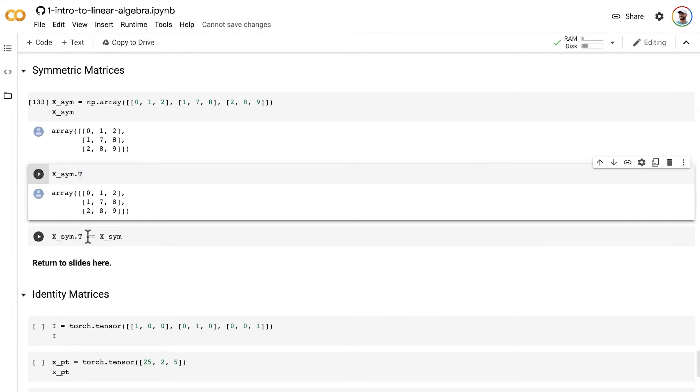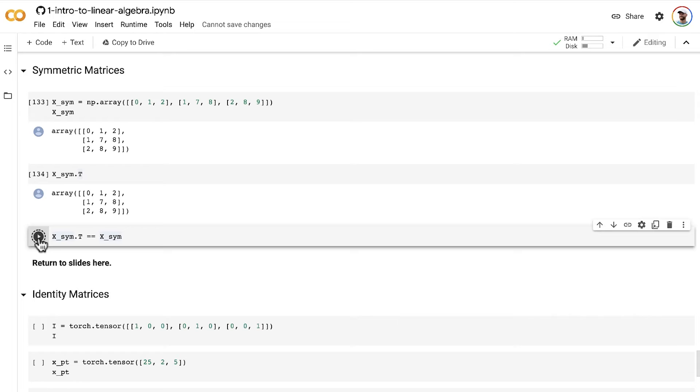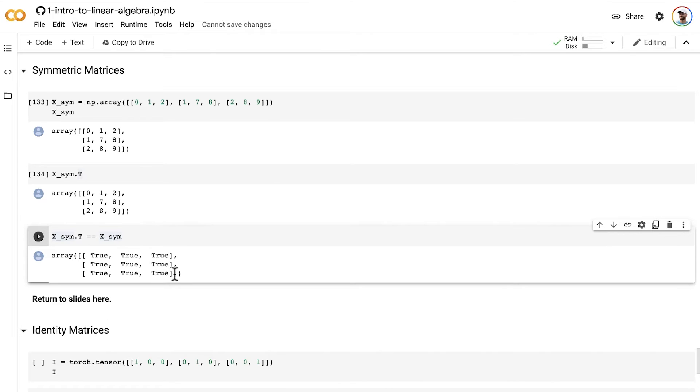If it was a bigger matrix, you could use the double equal sign to confirm that all the elements are the same, whether you have the transpose or the original. So that's a symmetric matrix.